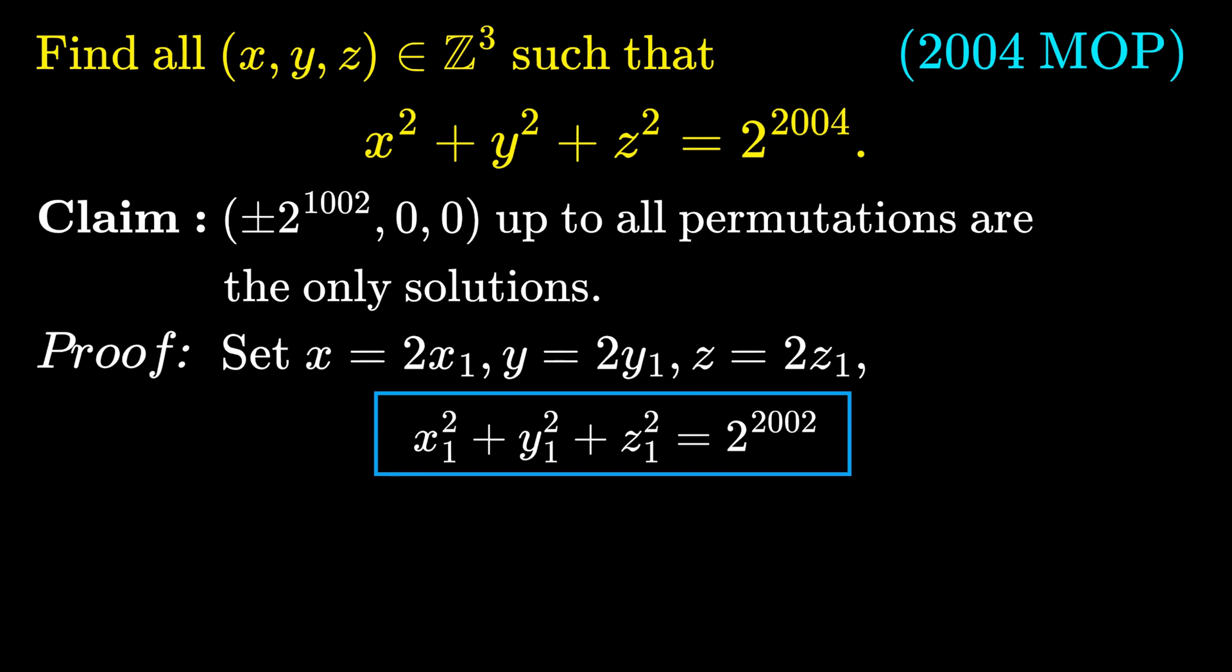But if you look closely, this is the same sort of equation that we have at the beginning. And we can use essentially the same argument, or by just changing the 2 power 2004 in our lemma to 2 power 2002, in order to show that x1, y1, z1 must also be even.